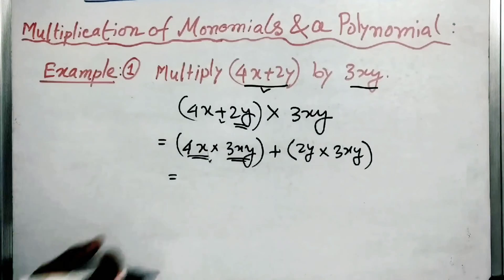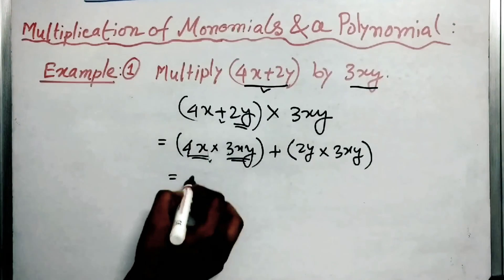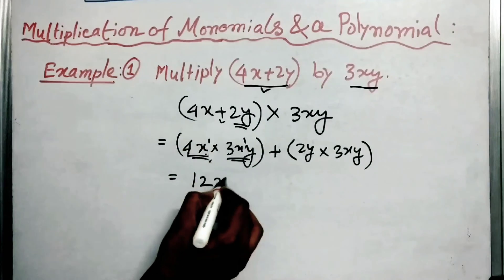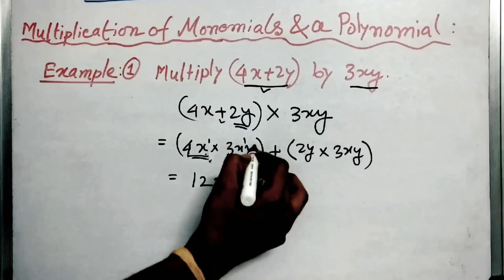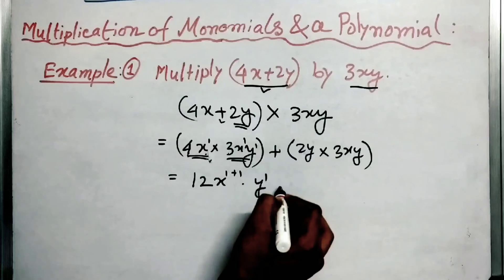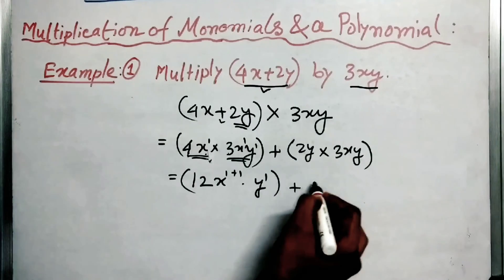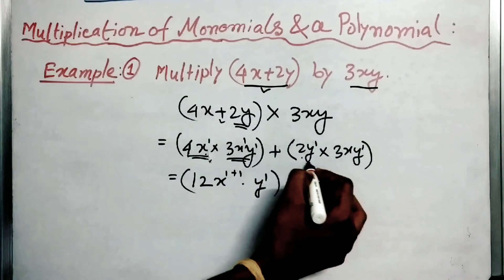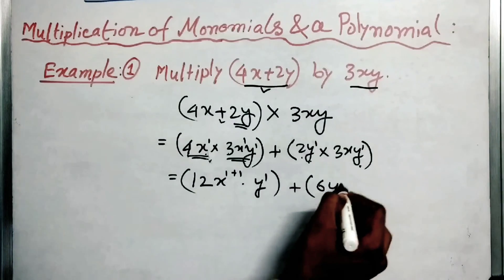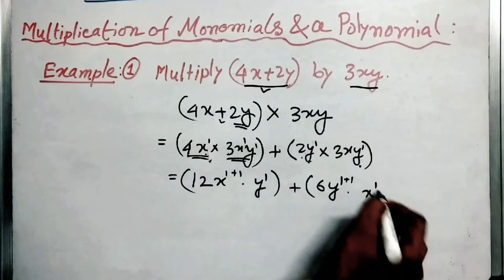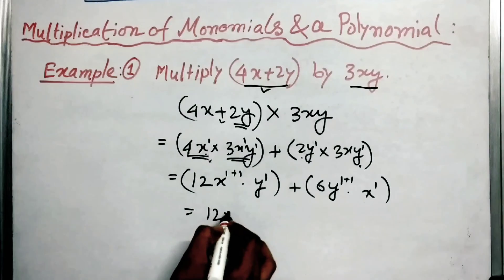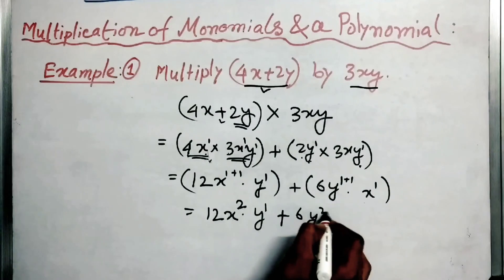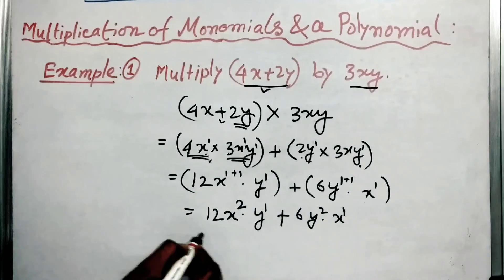These two are monomials. So 4 and 3 is 12. This x has power 1 and this x has power 1, so x to the power 1 plus 1, and y to the power 1. Now 2 and 3 is 6. This y and this y are like factors, so y to the power 1 plus 1, and x is alone, so x to the power 1. The result is 12x squared y plus 6y squared x.